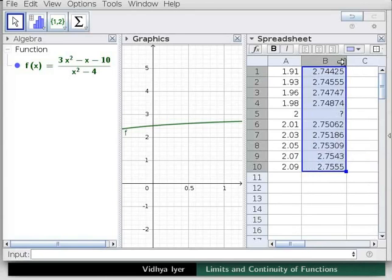Drag and increase the column width. Note that a question mark appears in cell B5 corresponding to x equals 2. This is because the function is undefined at this value.